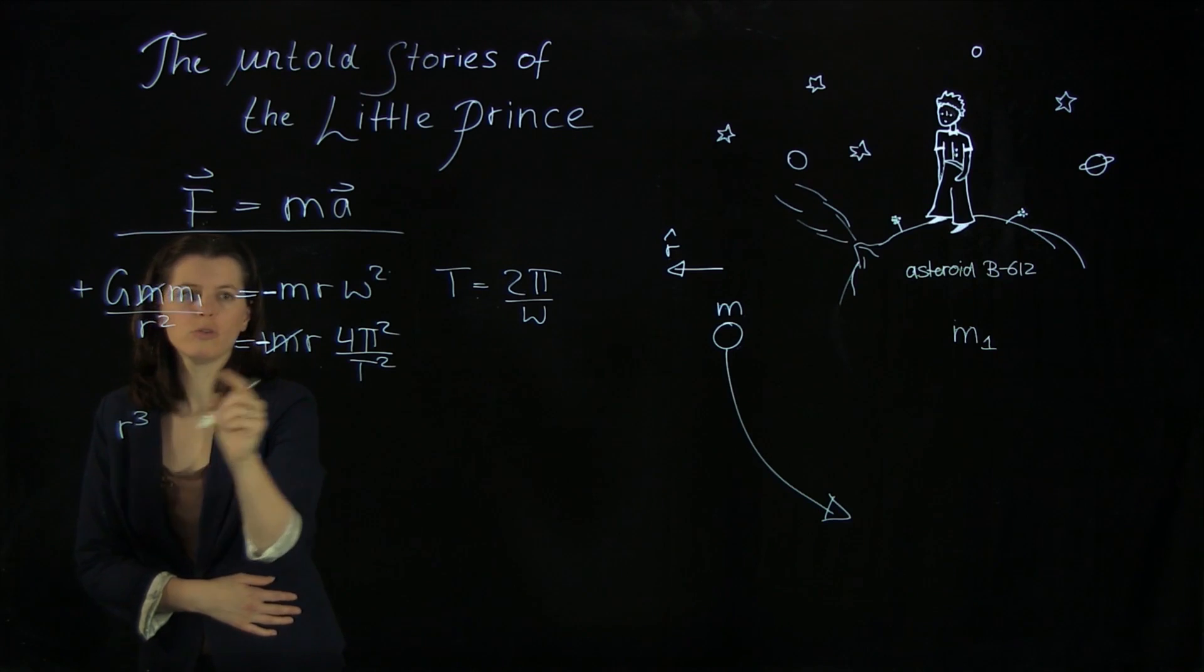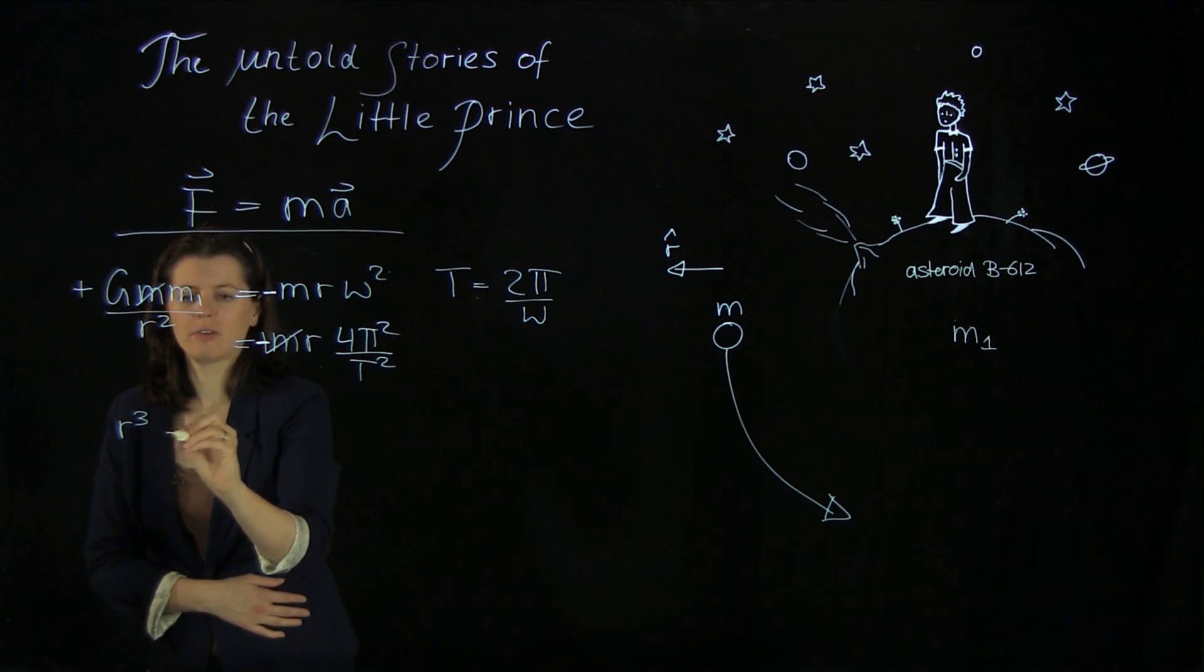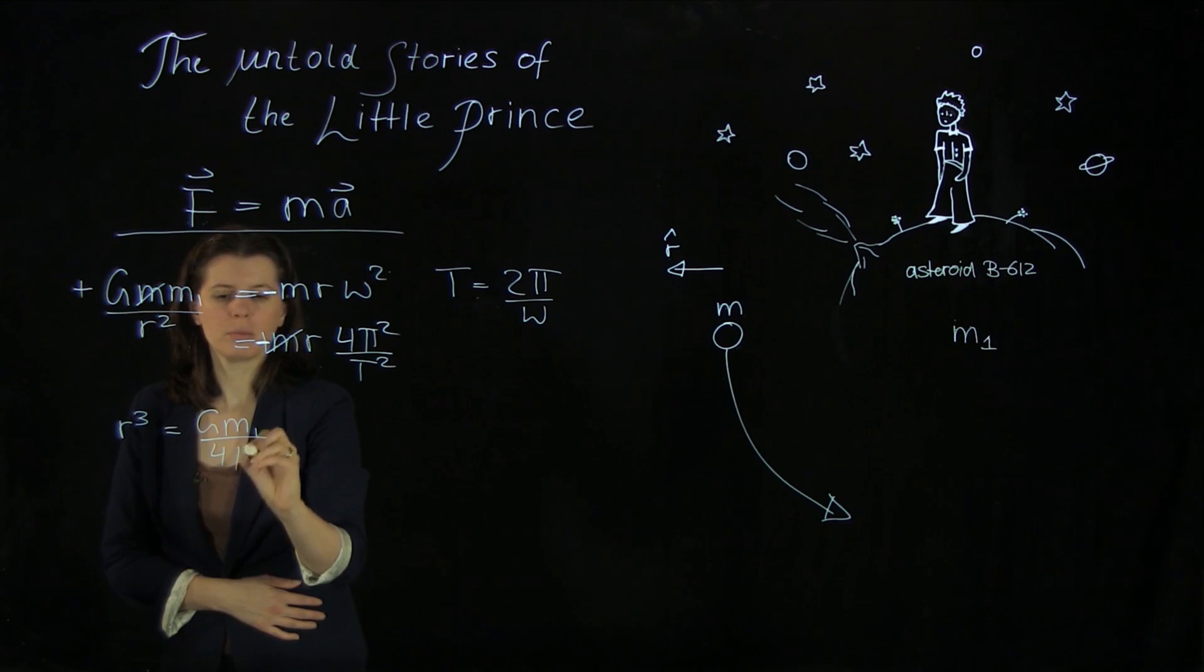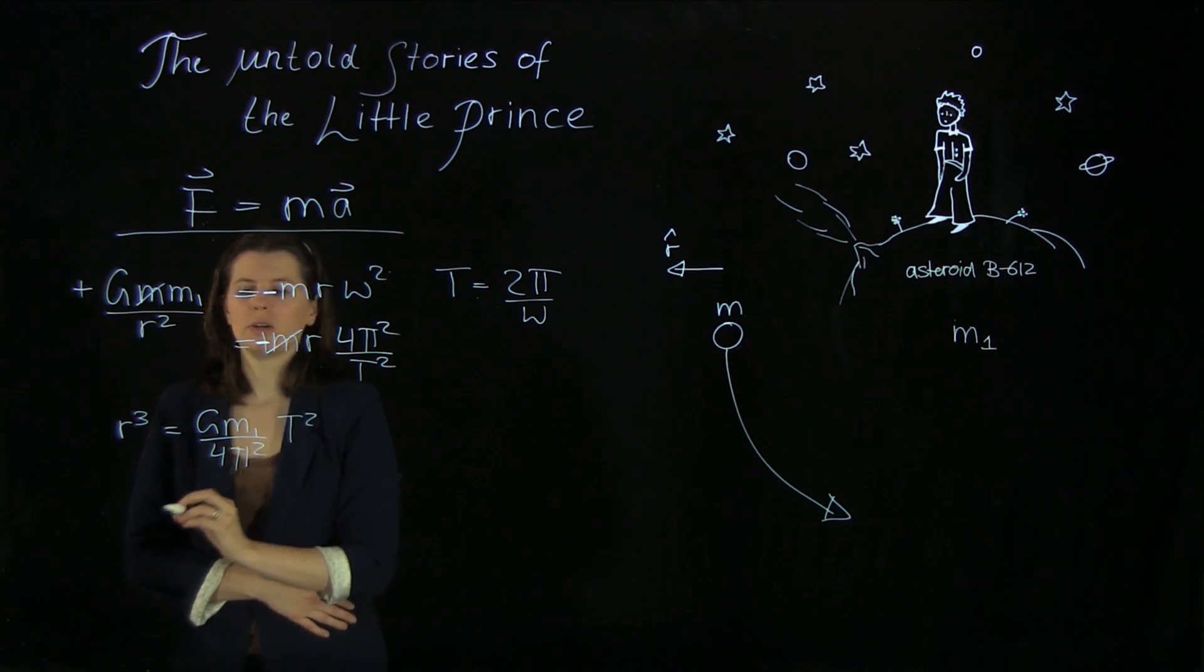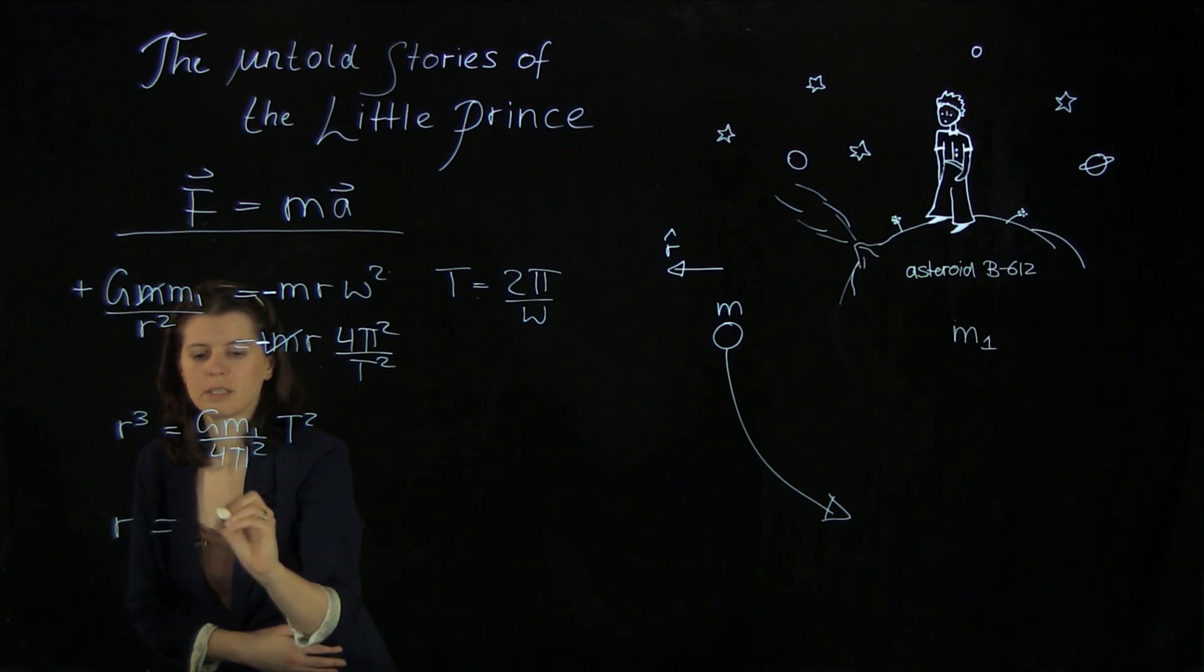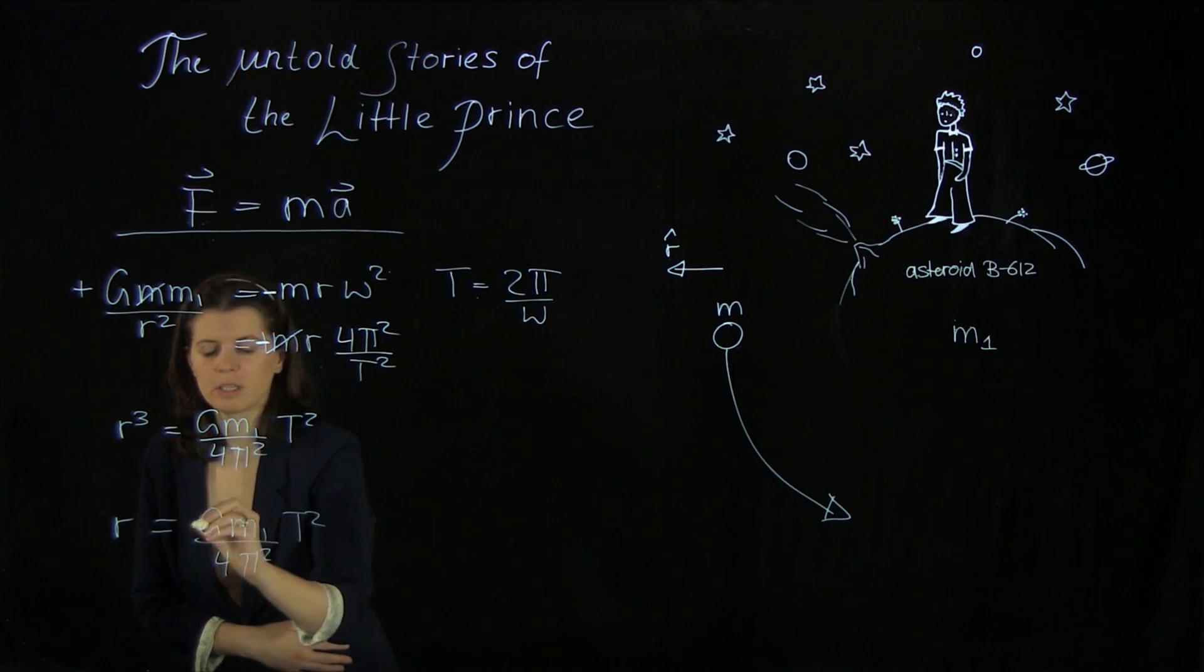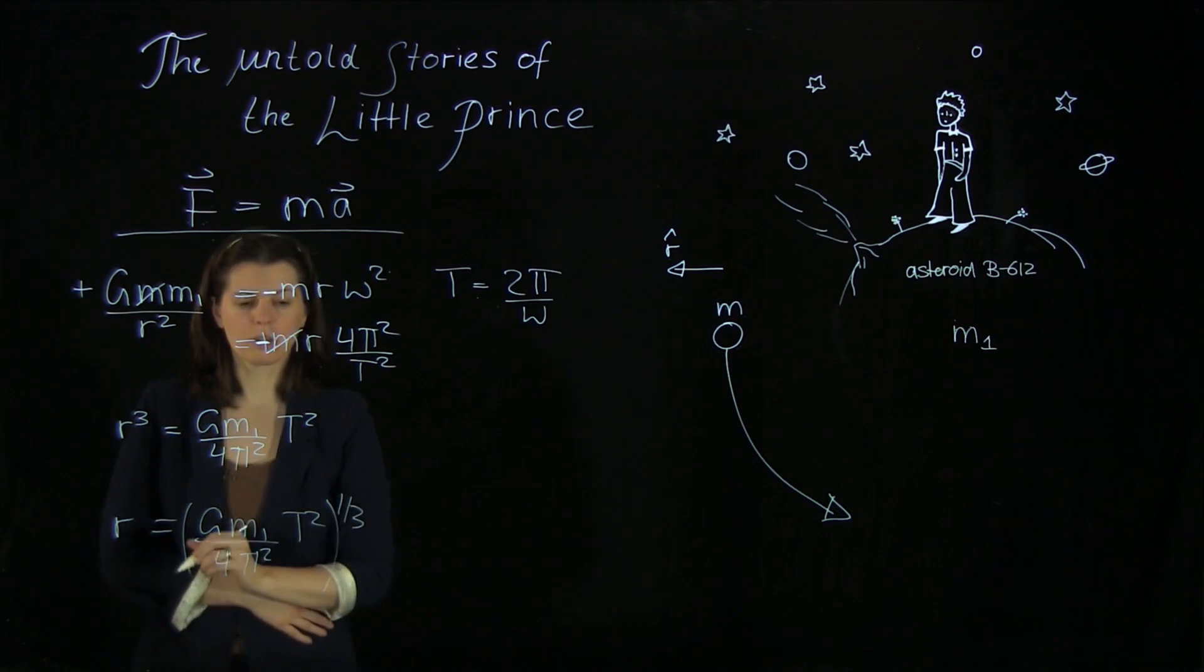And we're going to solve this for r. So we get r cubed, actually. And then we have gm1 over 4 pi squared. And here we have t squared. And we can also just write that as gm1 4 pi squared t squared and then we have a third root.